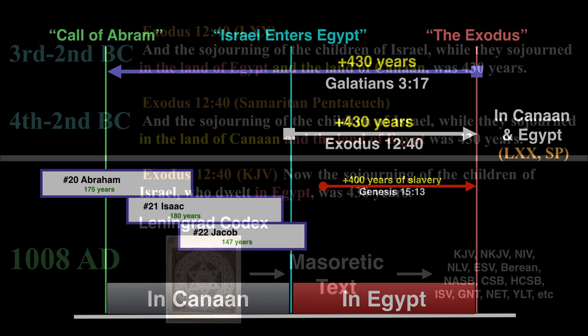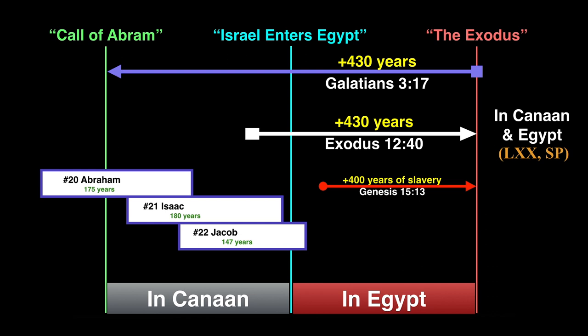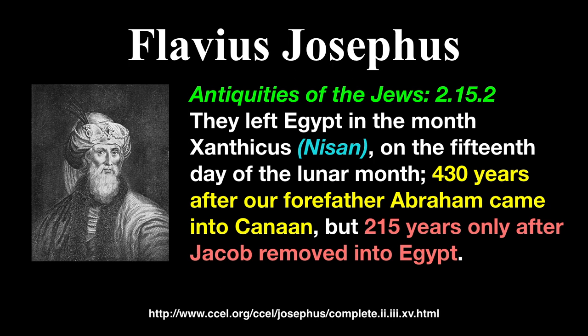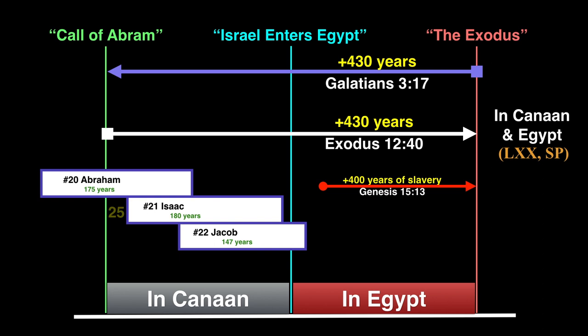So, on our timeline, it is fine because Exodus 12:40 should read in Canaan as well, so Galatians 3:17 and Exodus 12:40 are now in harmony. And this is backed up by Josephus, who agreed with the shorter chronology, saying, And they left Egypt in the month of Nisan, on the 15th day of the lunar month, 430 years after our forefather Abraham came into Canaan, but 215 years only after Jacob removed into Egypt. And he gets 215 years in Egypt because there were only 25 years from the call of Abram to Isaac's birth. 60 years later, Jacob was born, and Jacob was 130 when they entered into Egypt. So, altogether, that gives us 215 years in Canaan and 215 years in Egypt for a perfect division of time in each.